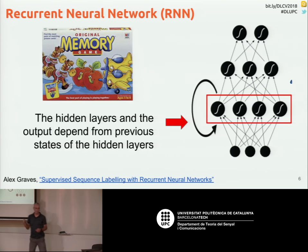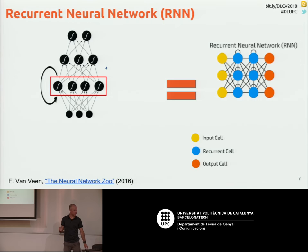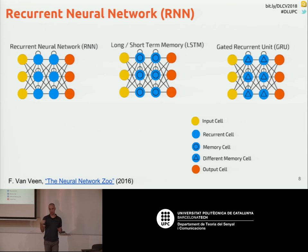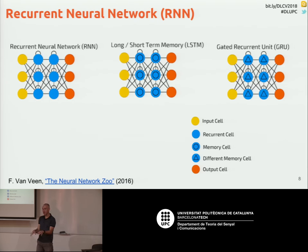If you try to implement recurrent neural networks naively, you'll see it's very unstable and really hard to train. So there have been solutions like long short-term memory (LSTM) or gated recurrent units (GRU), which are the most popular solutions that allow implementing this concept of memory. They are a bit more complex than just one hidden connection that feeds back to itself — there are some gates in there — but in the end, they are practical implementations of recurrent neural networks. When we talk about LSTM or GRU during this course, we are talking about implementations of recurrent neural networks that you can actually train in practice.